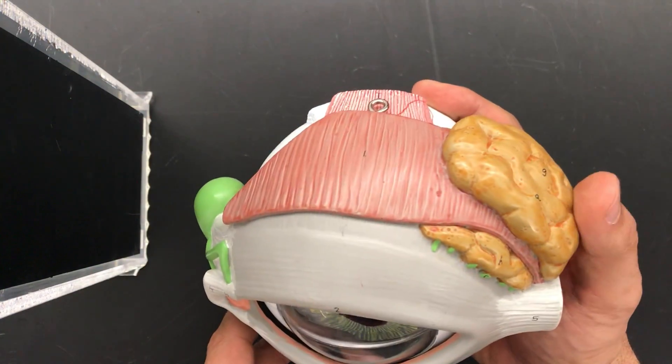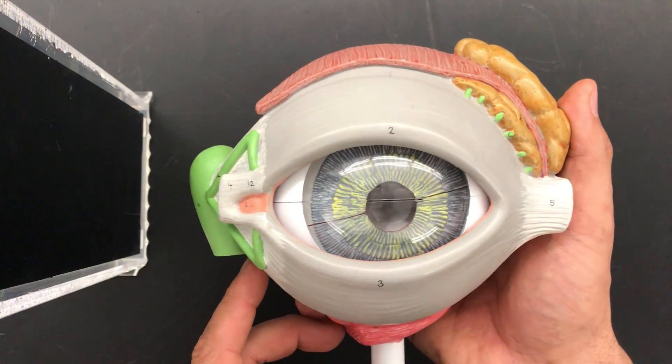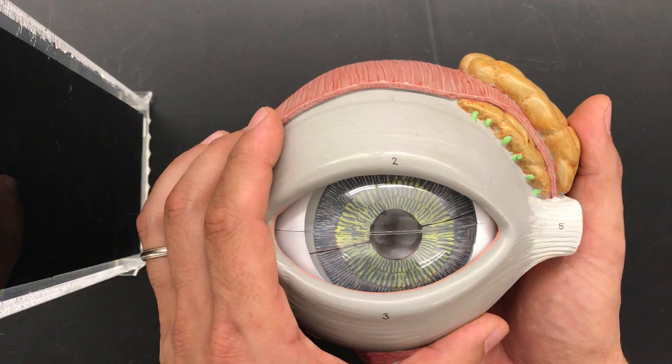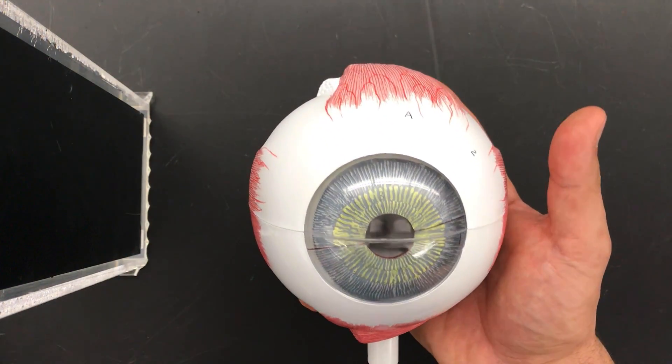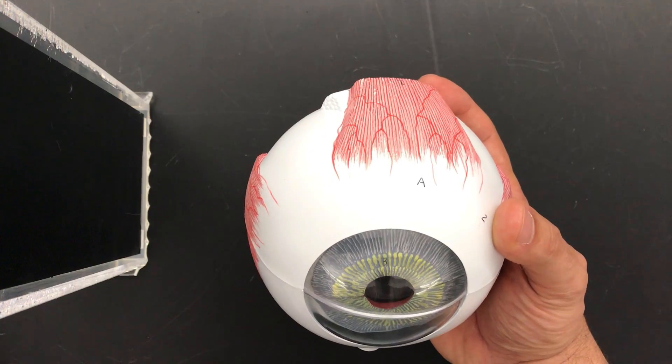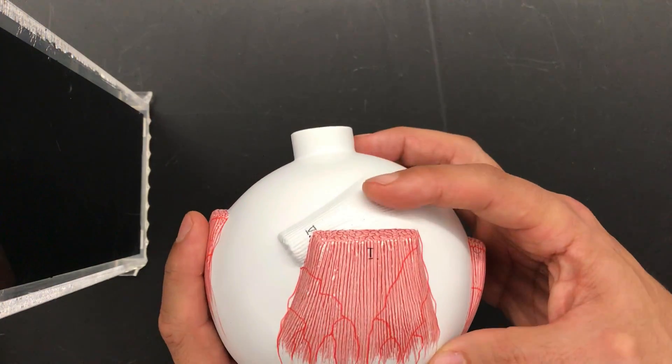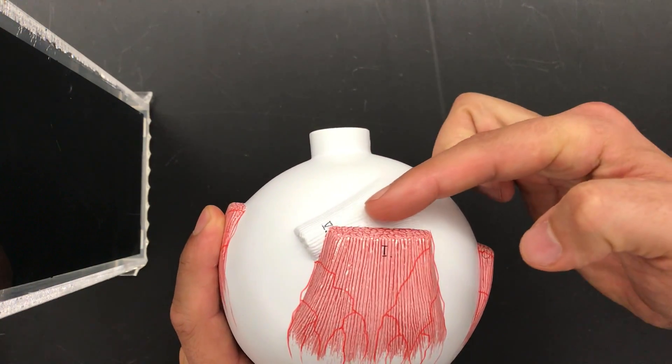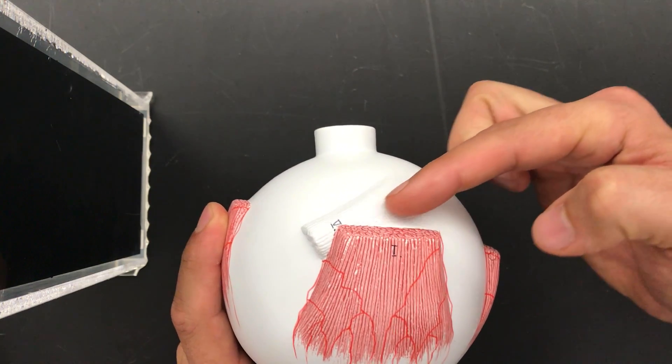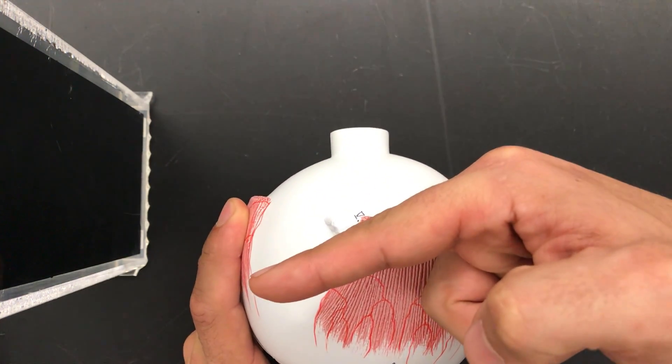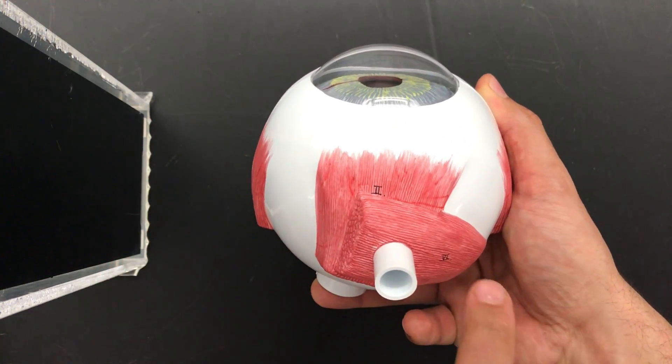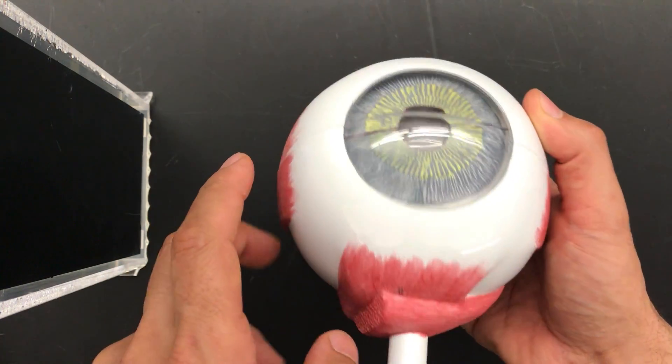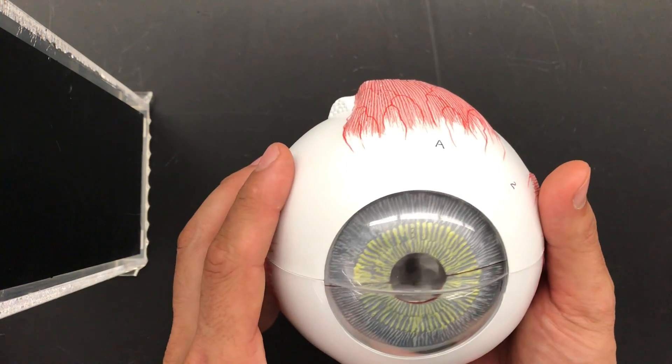The lacrimal gland sits lateral to the eye. The second way to tell that this is the left eye is that you have a couple of muscles pointing at angles - these are the obliques. This is your superior oblique that points medially and the inferior oblique that also points medially.